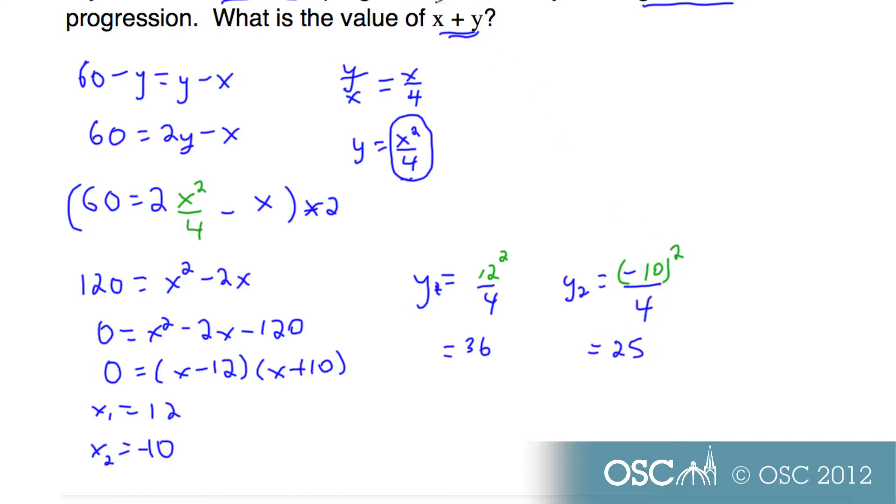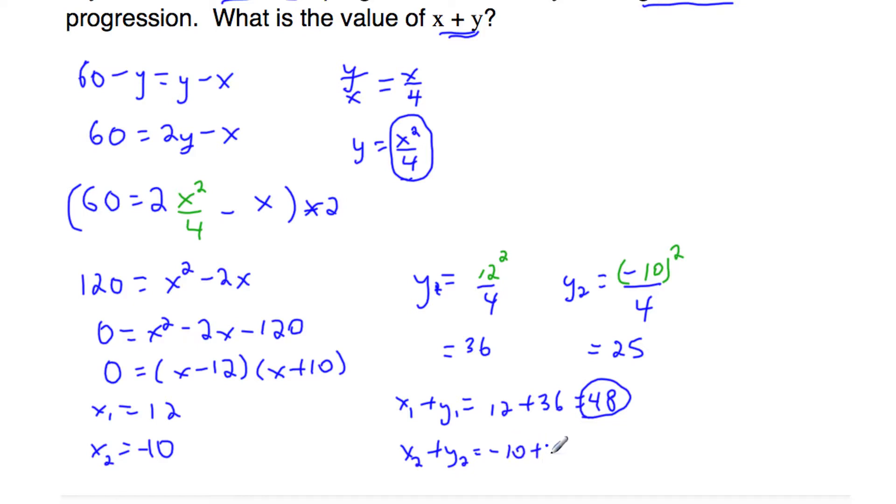Remember, the problem asked us for x plus y. So we're going to have two possible results here. You could have x1 plus y1, which is 12 plus 36, resulting in 48 as one of our answers. The other answer, x2 plus y2 equals negative 10 plus 25, which is 15.